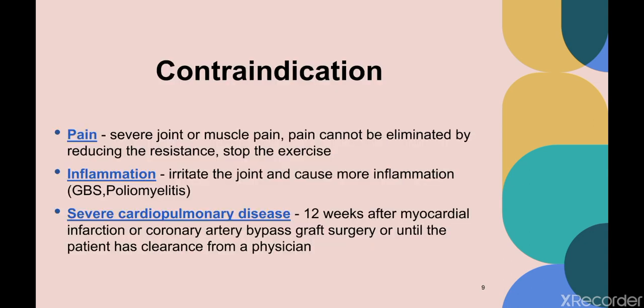Contraindications to progressive resistance exercises include three main categories: first, severe joint or muscle pain that cannot be eliminated by reducing resistance; second, inflammatory conditions such as GBS and poliomyelitis, where resistance exercise can irritate the joint and cause more inflammation; third, severe cardiopulmonary disease — resistance training should not begin until 12 weeks after myocardial infarction or coronary artery bypass grafting surgery, or until the patient has clearance from a physician.